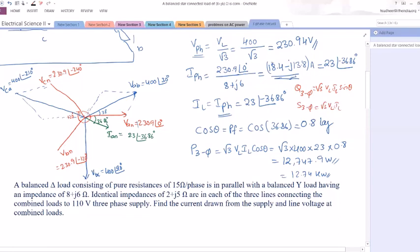Where you have to draw IBN? IBN should lag behind VBN by 36.86. So what will be IBN value? IBN value will be 23 at an angle of minus 36.86 minus 120, so it will be minus 156.86 degrees. So where I have to draw ICN? ICN will be lagging behind VCN by 36.86 degrees. That is 23 at an angle of minus 276.86 degrees.